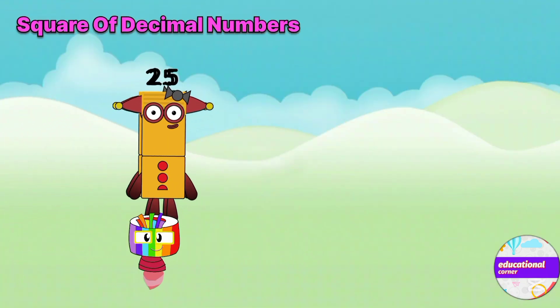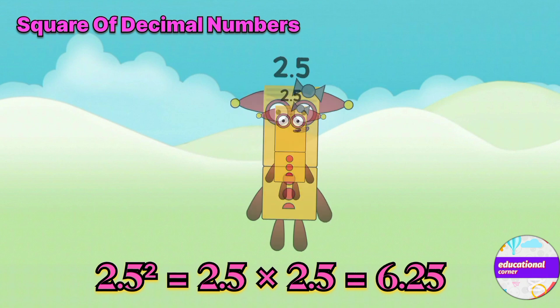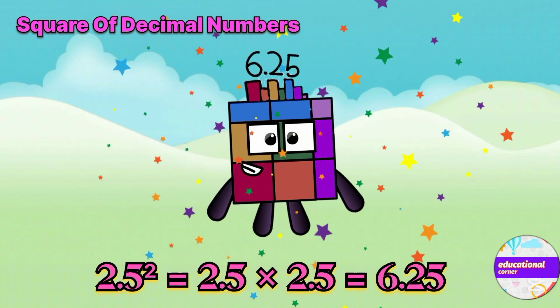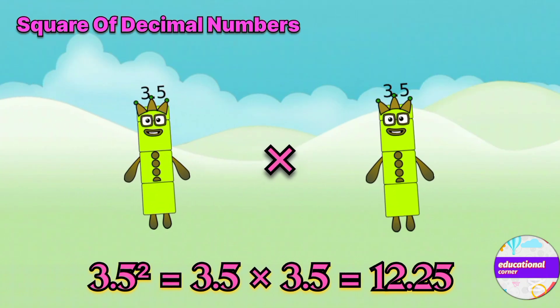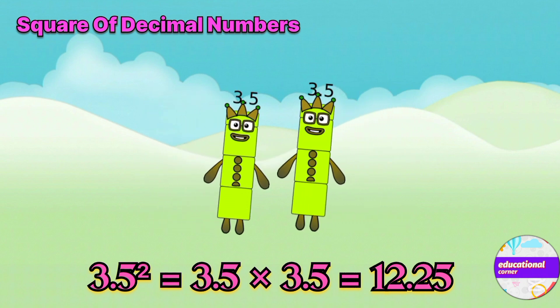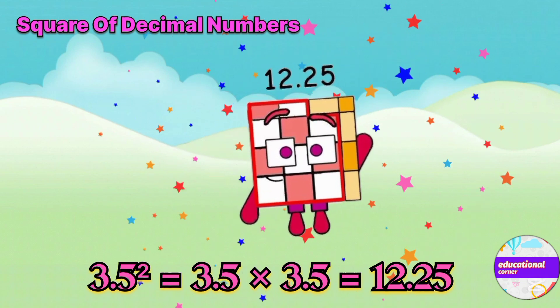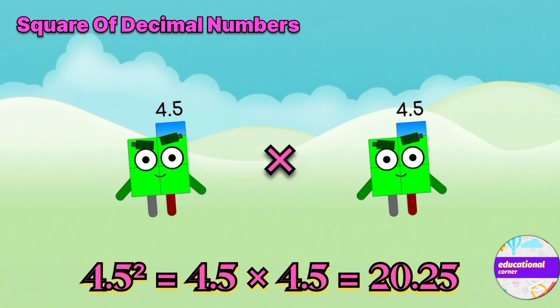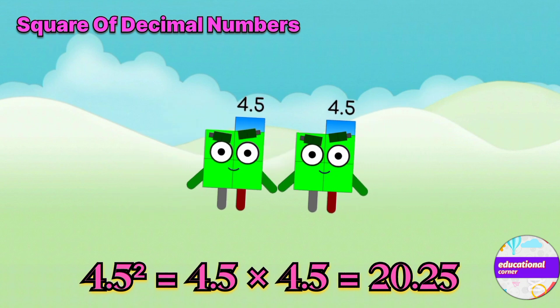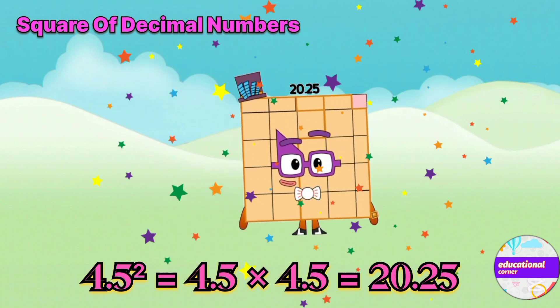What's the square of 2.5? 2.5 x 2.5 equals 6.25. 3.5 x 3.5 equals 12.25. 4.5 x 4.5 equals 20.25.